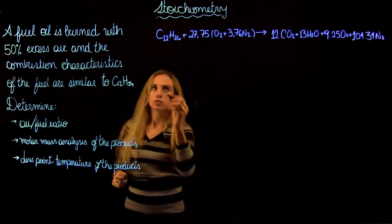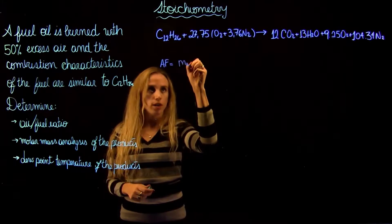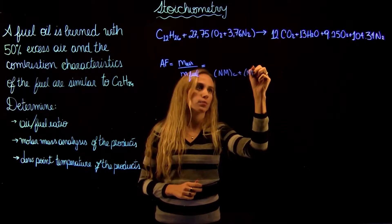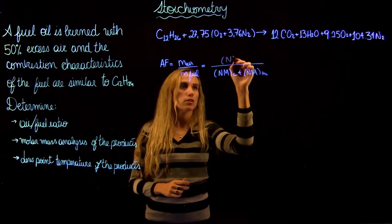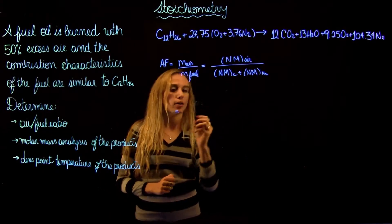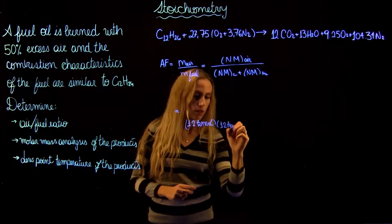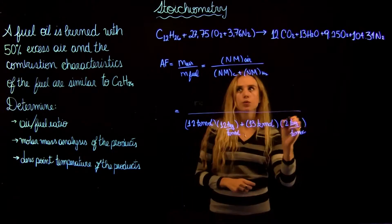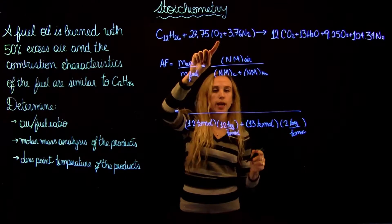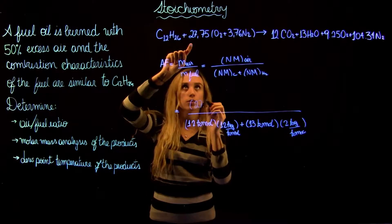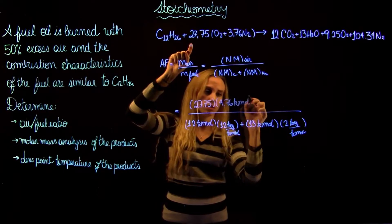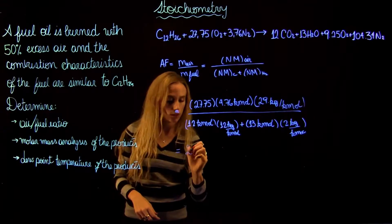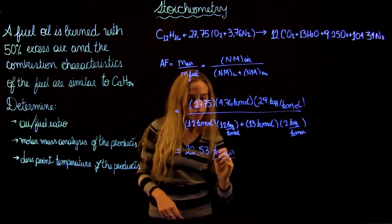We can now find the air-to-fuel ratio, which is the mass of air divided by the mass of fuel. The fuel mass is: 12 kilomol × 12 kg/kmol (carbon) plus 13 kilomol × 2 kg/kmol (hydrogen). For air, we recall that for each mole of oxygen we have 4.76 moles of air, so 27.75 times 4.76 kilomol of air at 29 kg/kmol. This gives an air-to-fuel ratio of 20.53 kg of air per kg of fuel.